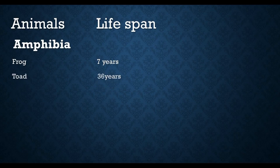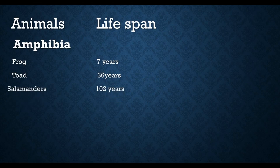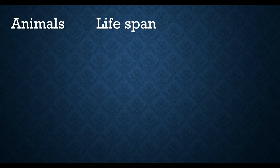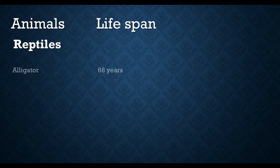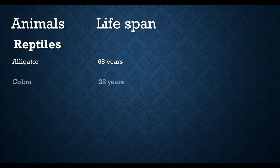Toad lifespan is 36 years, salamander lifespan is 102 years. Next are reptiles: alligator lifespan is 68 years, cobra lifespan is 28 years.